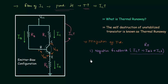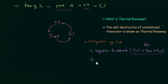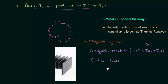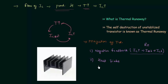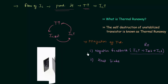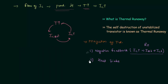The second way to reduce thermal runaway is by using heat sinks. There are different types of heat sinks available, and we can use heat sinks for proper dissipation of heat. So these are the two ways by which we can mitigate thermal runaway.